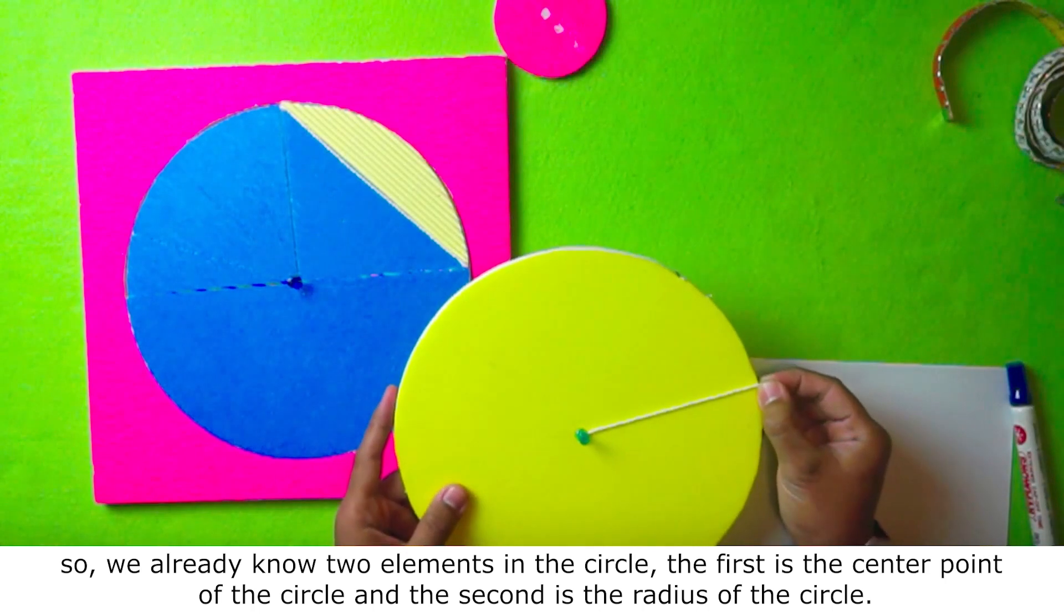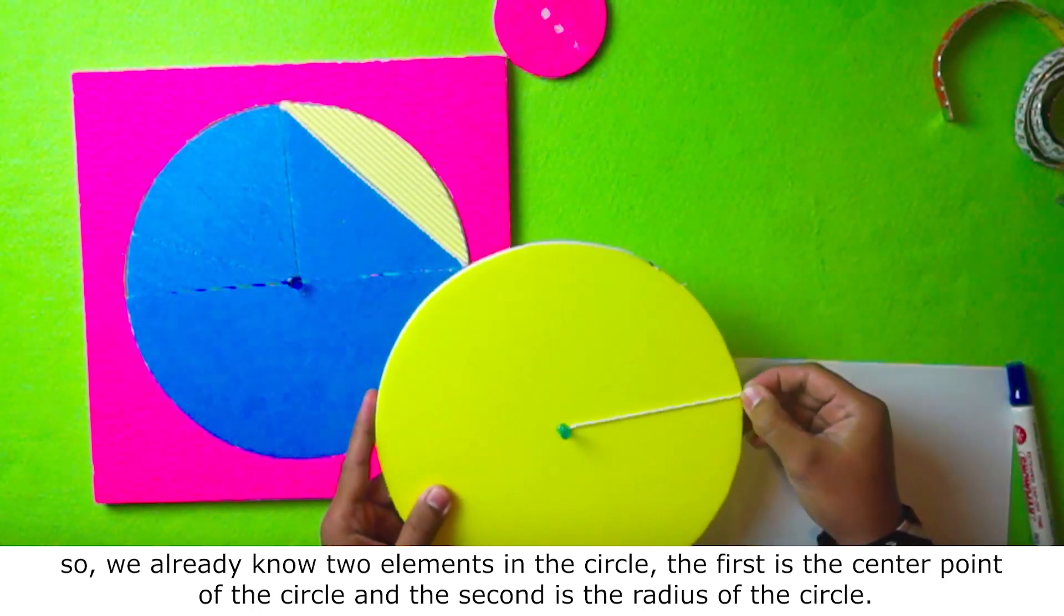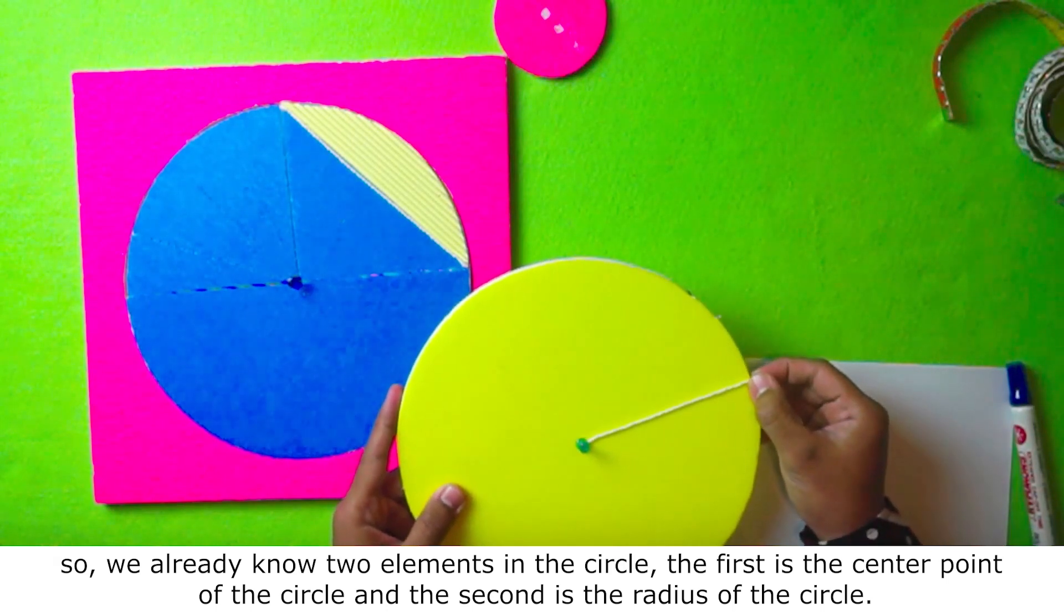We call the distance from the center of the circle to the point on the circle with the radius. So we already know two elements in the circle. The first is the center point of the circle and the second is the radius of the circle.